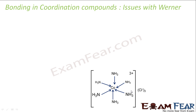Before that, let's understand the issues with Werner. Werner could postulate that the coordination compound shows two linkages — primary and secondary. Primary valences are ionizable; the moment you put it in solution, it will come out. Secondary valences are non-ionizable, meaning the whole coordination sphere will not dissociate in solution. It will be intact and is satisfied by ligands — neutral or negatively charged, like Cl⁻ or NH₃.